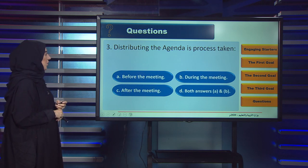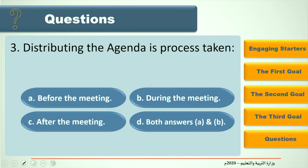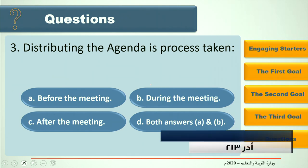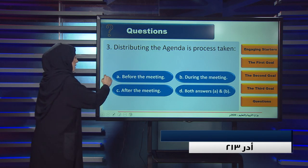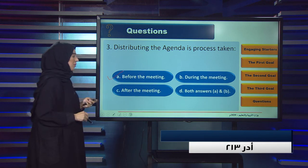Question three: Distributing the agenda is a process taken — A. Before the meeting, B. During the meeting, C. After the meeting, D. Both A and B. The answer is A: Before the meeting.